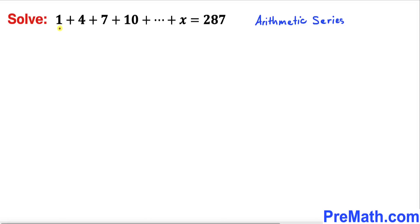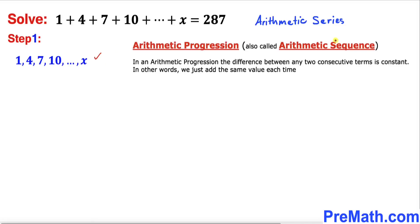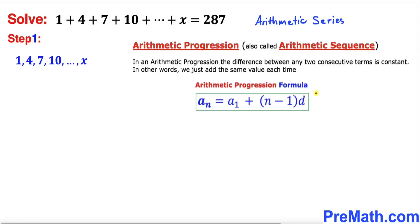Let's go ahead and get started with the solution. Let's focus on the left hand side of this equation. This kind of sequence is called an arithmetic sequence, or sometimes arithmetic progression. We call it an arithmetic sequence because the common difference between any two consecutive terms is always the same — the difference between consecutive terms is 3, and it is consistent.